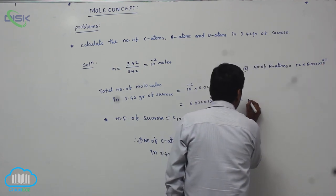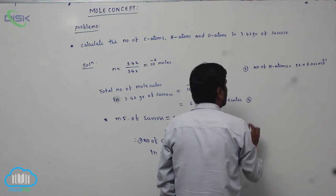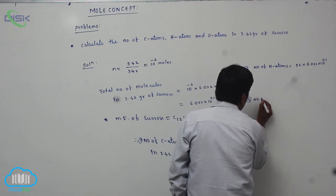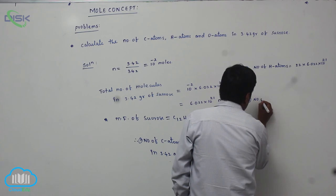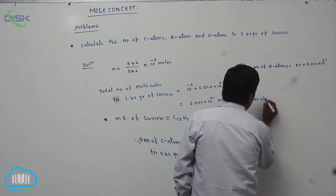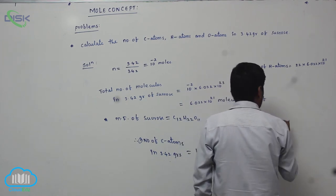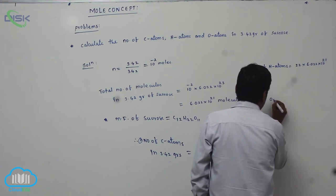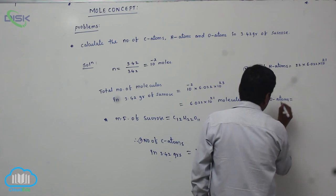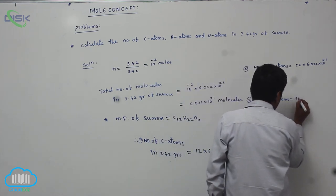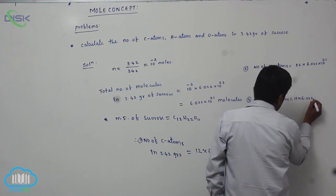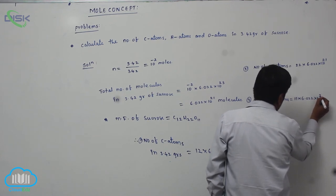Third, the number of oxygen atoms equals 11 oxygen atoms per molecule. So therefore, 11 into 6.022 into 10 power 21.